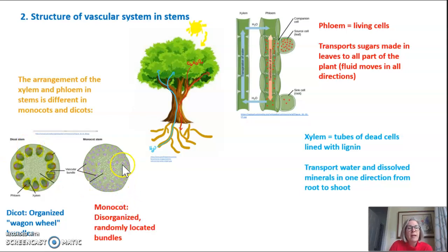If you look at a monocot stem it just looks like someone threw these vascular bundles down in a random order it's very disorganized. Each of these purple structures is a combination of xylem and phloem but they are placed randomly throughout the stem.